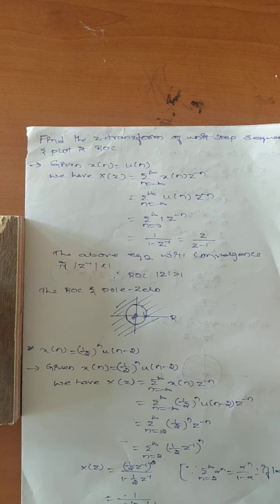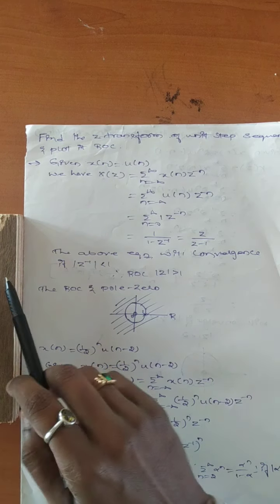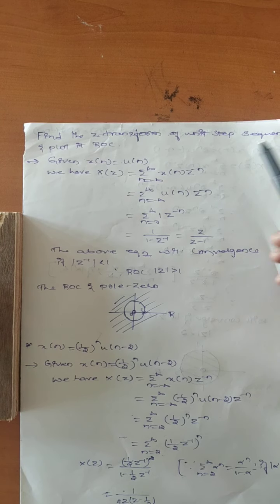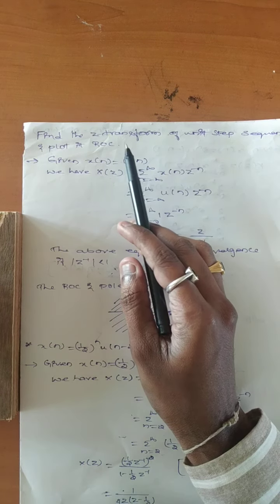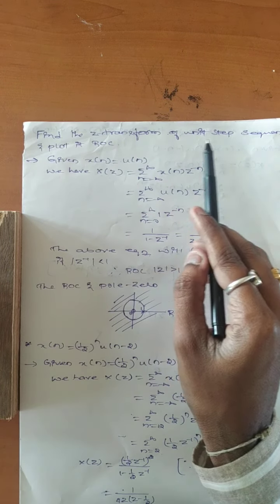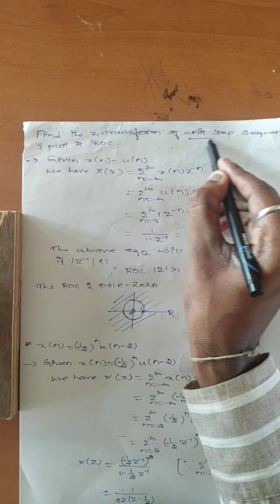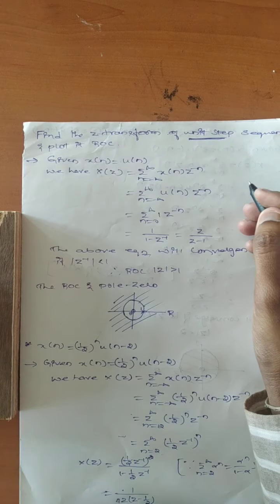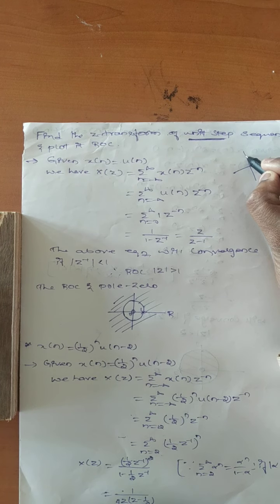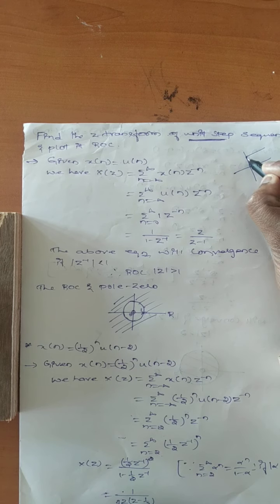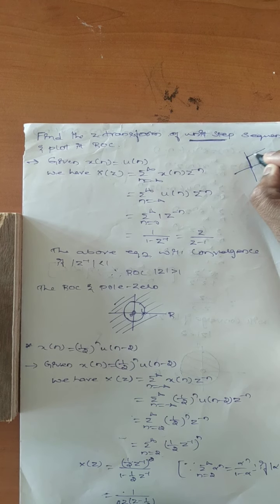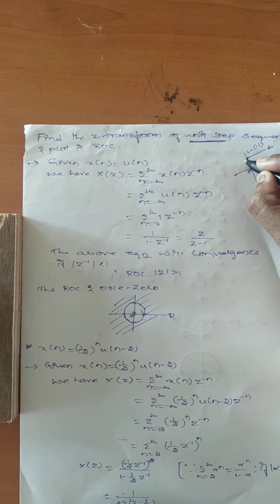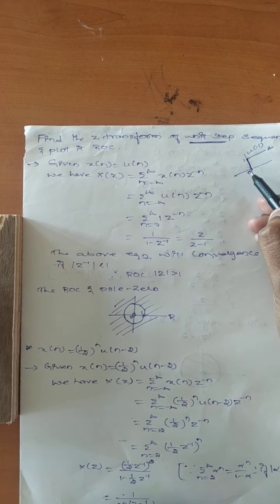Good morning dear students. Today we will continue with the same Z transforms problems. The problem is: find the Z transform of unit step sequence and plot its ROC. They have not mentioned any equation — they are just asking for the Z transform of unit step sequence. The unit step sequence is the basic signal, with range 0 to infinity and amplitude 1.